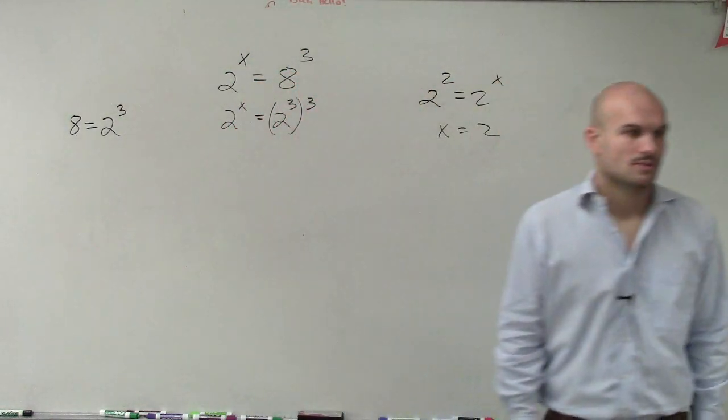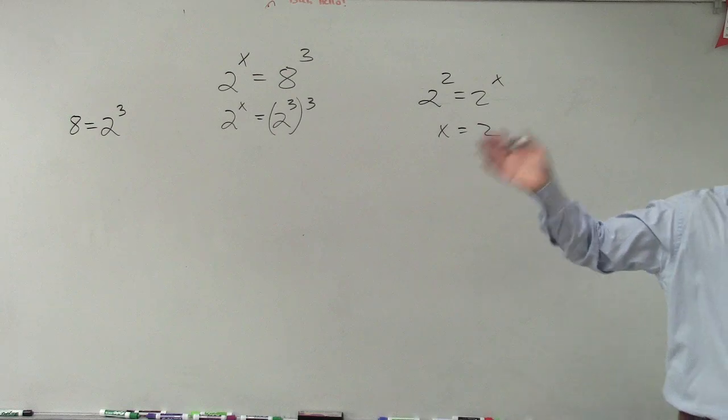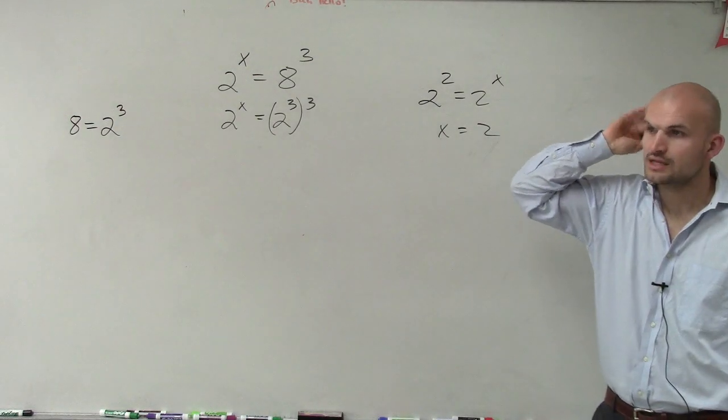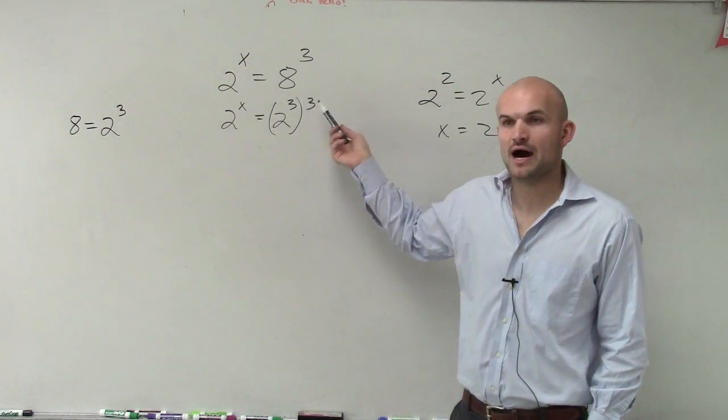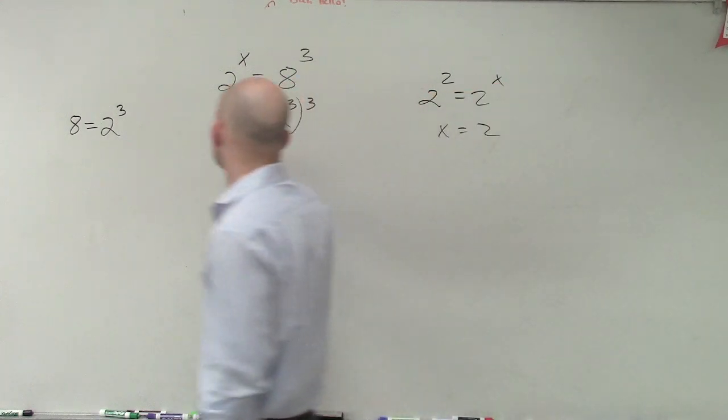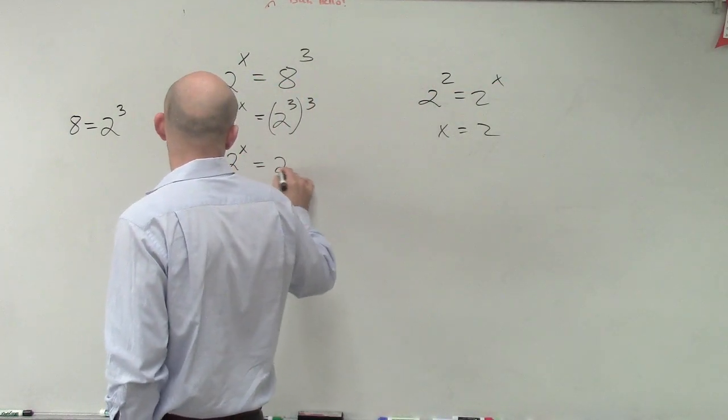Does everybody follow me and agree with what I did? So now we use the power of power rule of exponents. So I have 2 to the x equals 2 to the 9.